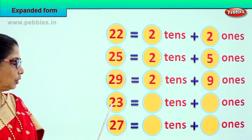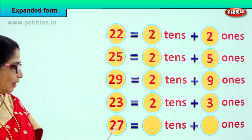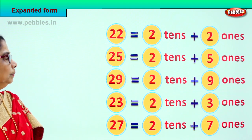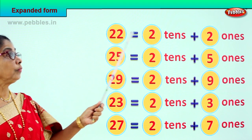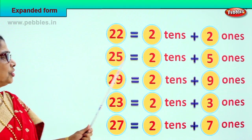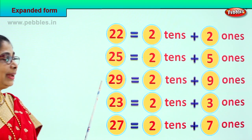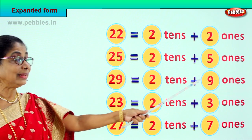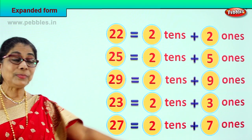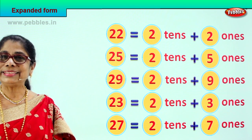Next number, 23: 2 tens plus 3 ones. And 27: 2 tens plus 7 ones. Let's look at it all: 22 is 2 tens plus 2 ones. 25 is 2 tens plus 5 ones. 29 is 2 tens plus 9 ones. 23 is 2 tens plus 3 ones. 27 is 2 tens plus 7 ones. Did you enjoy?